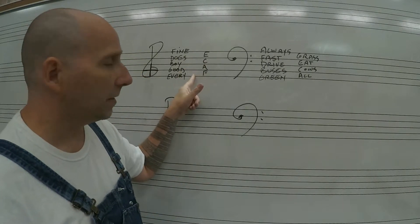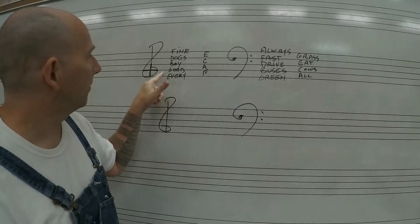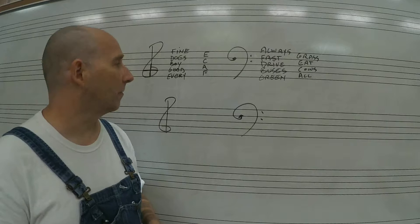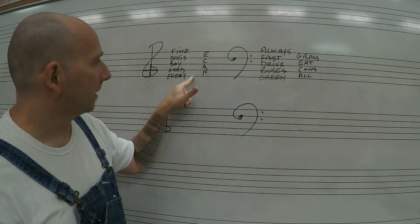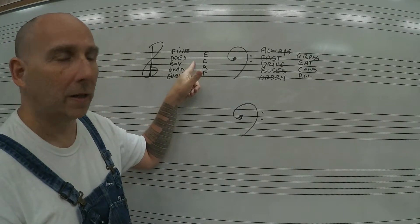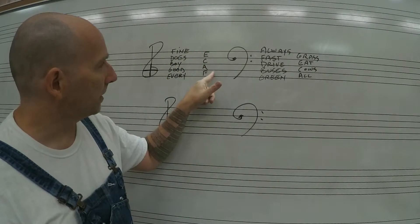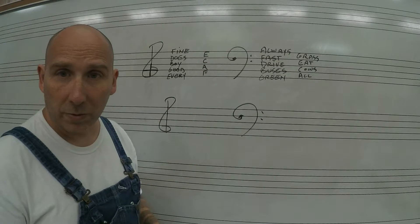So naming the notes on the lines within the staff: Every Good Boy Does Fine. Most of you I'm sure have heard that before. First line is E for Every, G for Good, B for Boy, D for Does, F for Fine. And then the spaces are F A C E which spells the word face.